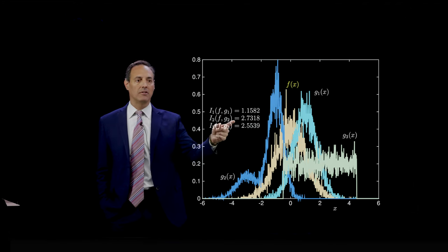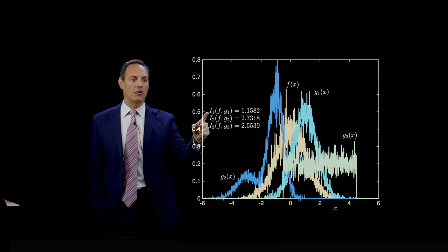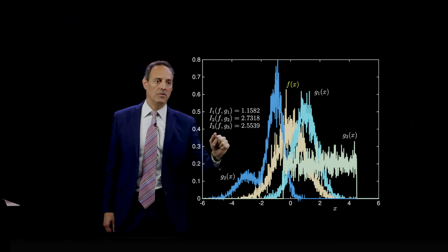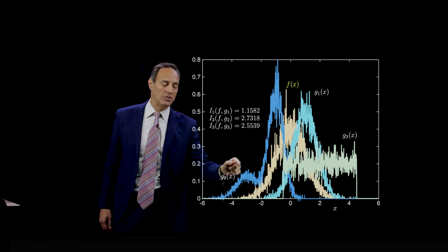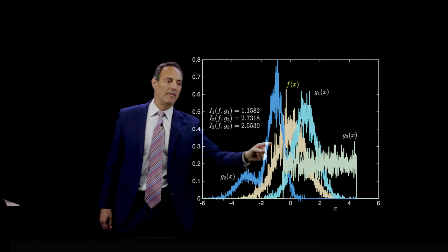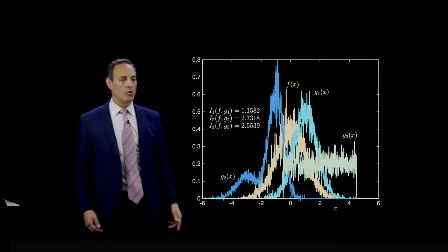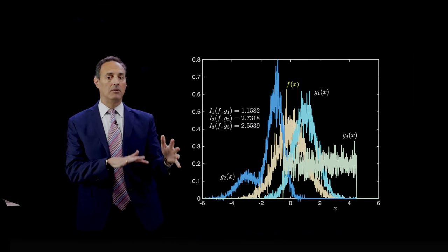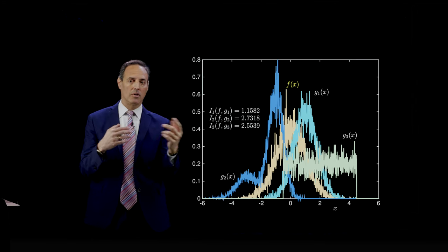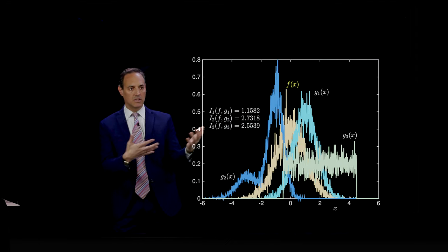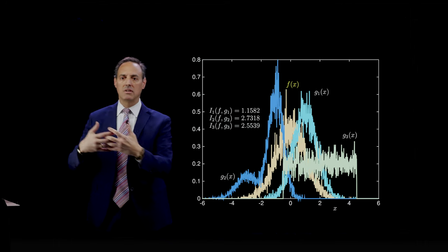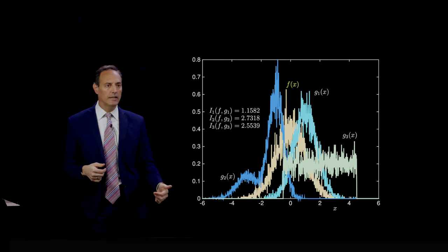I can run it through that KL divergence metric and produce the KL divergence of the three models. The distance between f and G1 is 1.1582. The distance between the gold and G2 is 2.73, and the distance between f and G3 is 2.55. So I have a way to quantify the distance from one PDF to another. The best fit, the best model would be G1. It gives me the lowest KL divergence.